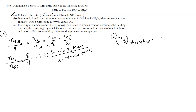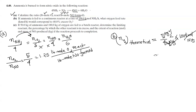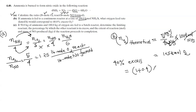The theoretical oxygen from the stoichiometric ratio is 5 by 4, so 5 mol O2 per 4 mol NH3. With 40 percent excess, the actual oxygen feed is (1 + 0.4) times the theoretical oxygen. This gives us the required oxygen feed rate in kilomoles per hour for this continuous combustion-type reaction.